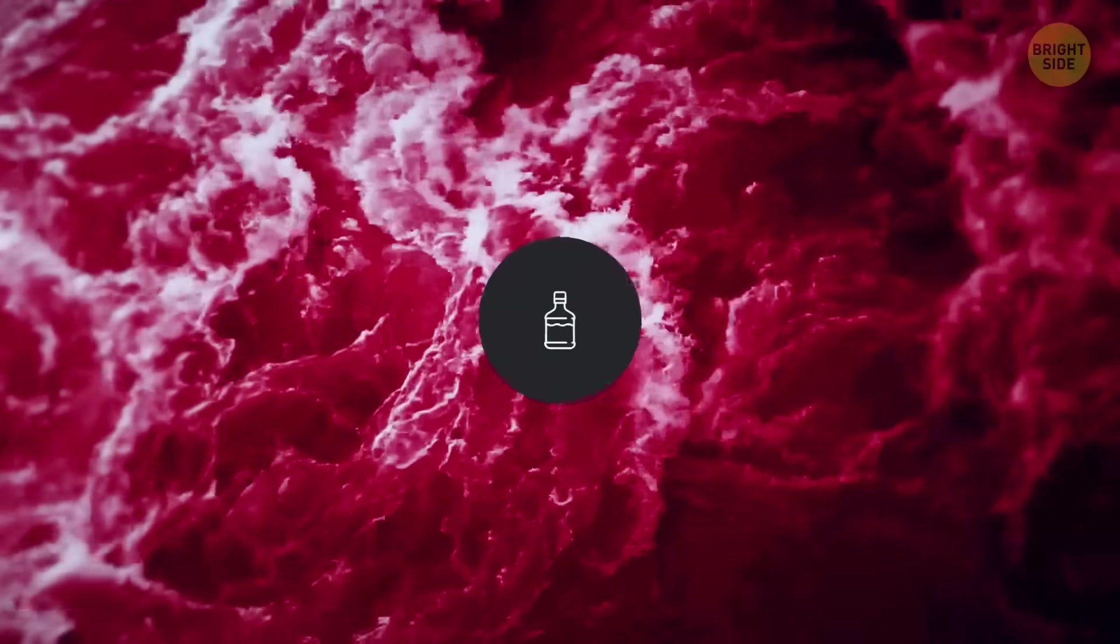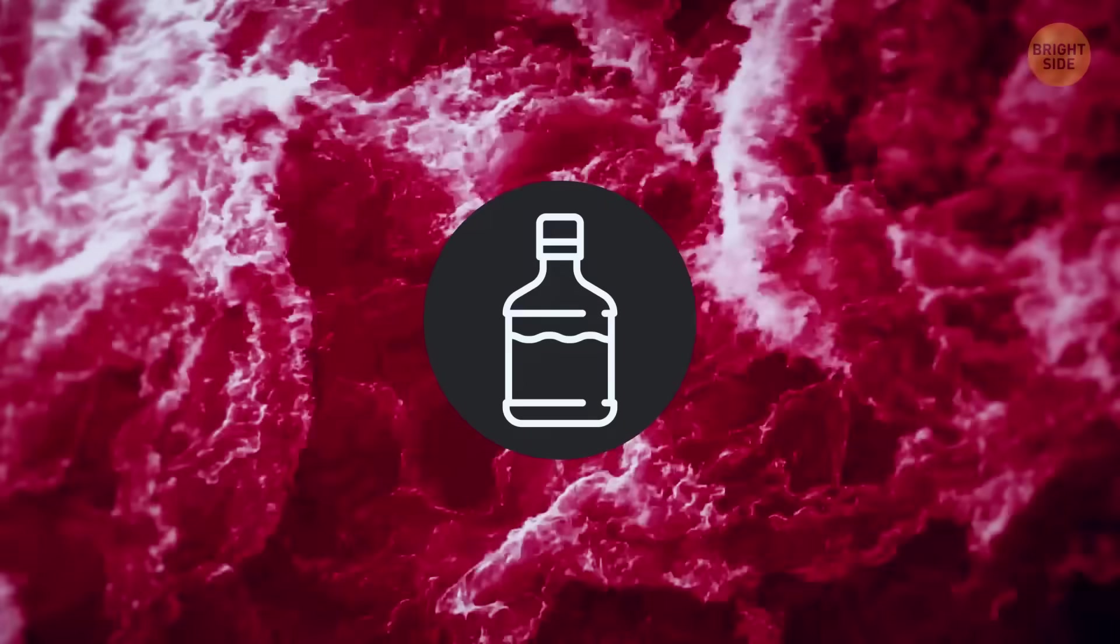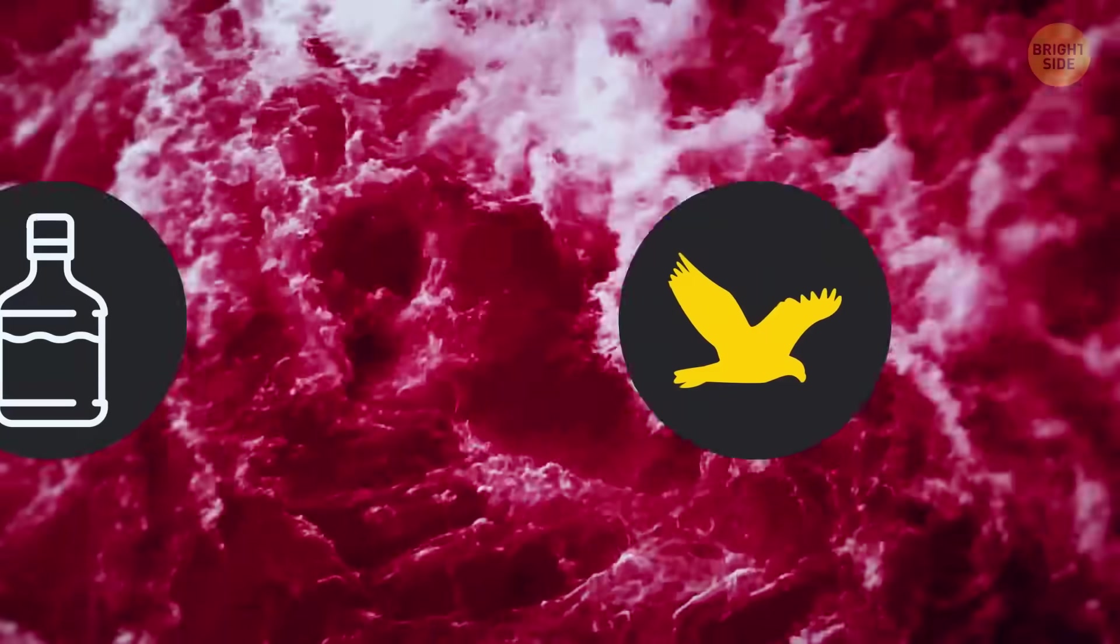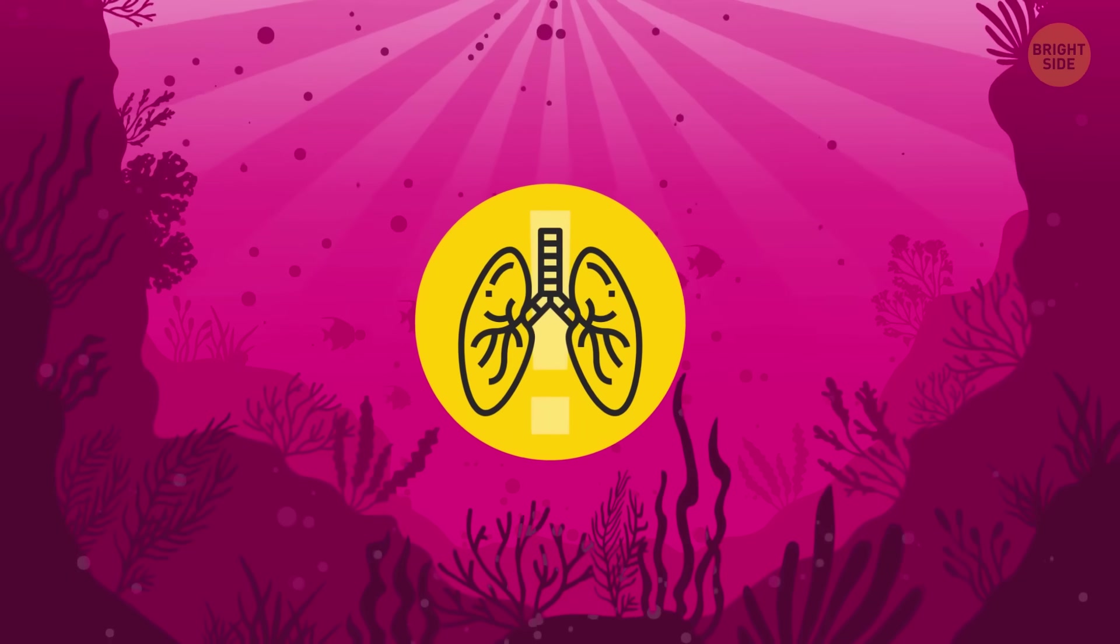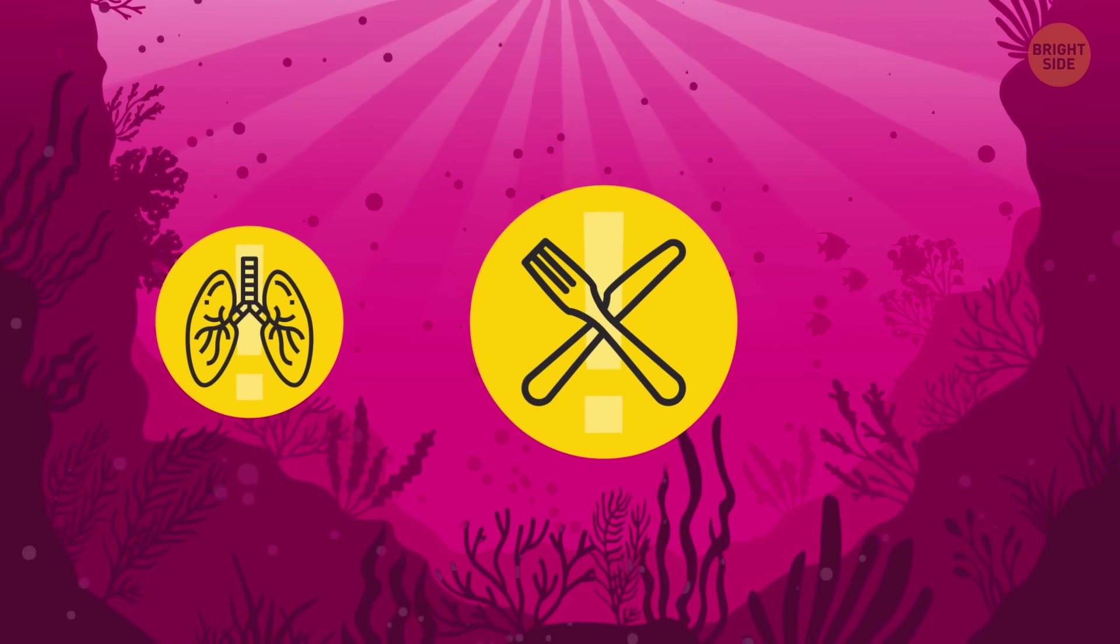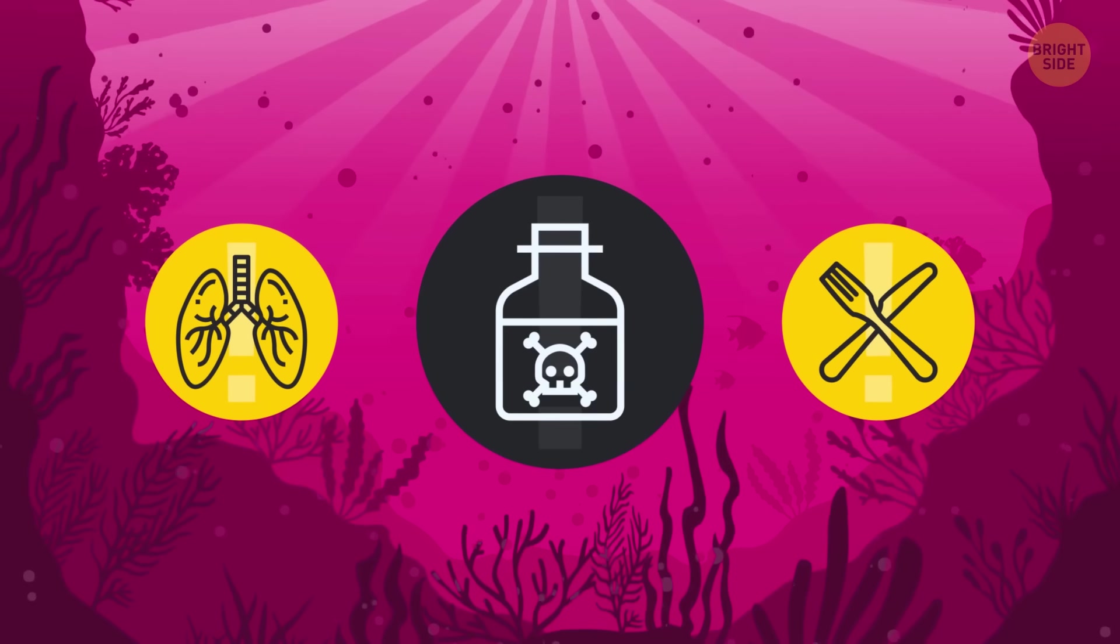During a red tide, a gallon of seawater can contain millions of algae, which is extremely dangerous for birds, marine animals, and even us people. Red algae can mess with breathing, and eating fish and shellfish caught in the red tide can lead to bad food poisoning.